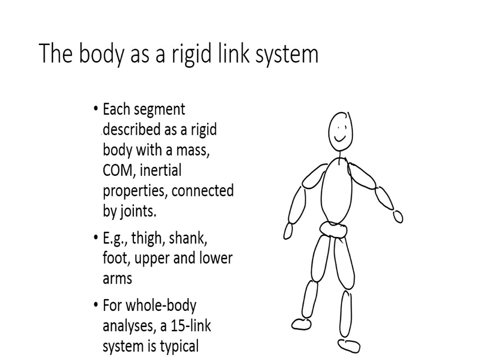One of the things that we always think about in biomechanics is that the body is really a linked system of rigid segments. Each segment can be described as a rigid body that has a mass, a center of mass, and inertial properties, and all of these segments are connected by joints. On your stick figure, you can see that we talk about dividing things up into the foot, the shank or lower leg, the thighs, the pelvis, the trunk, and then upper arms, lower arms, and hands. Often we'll use a 15-link system to describe different types of motion.